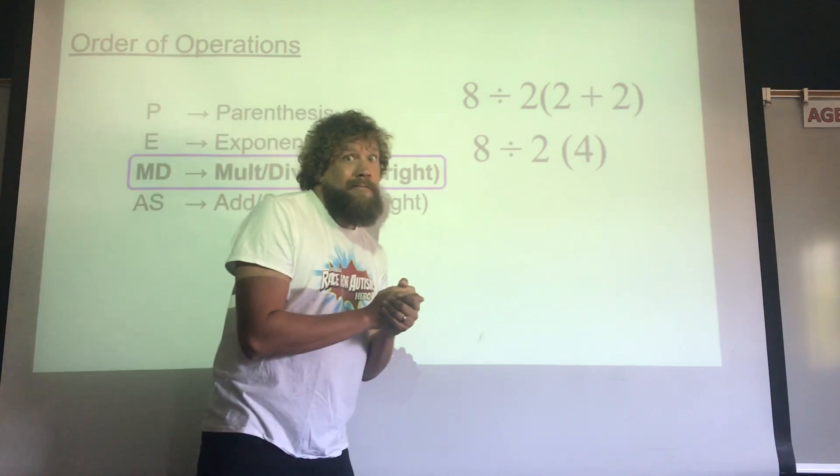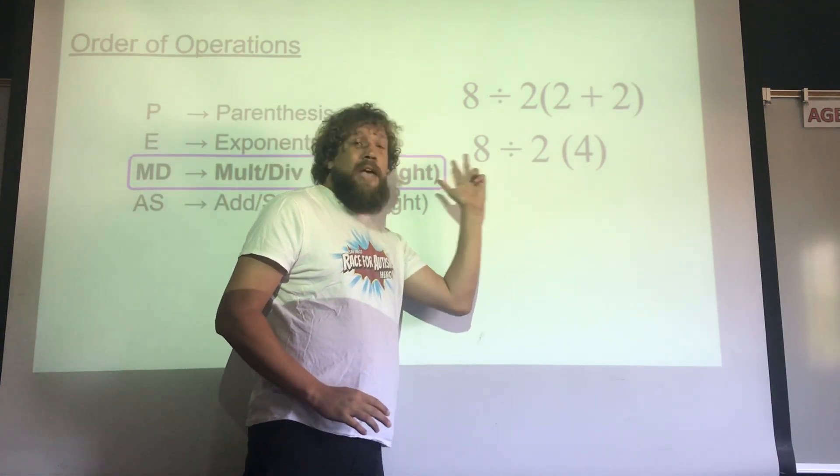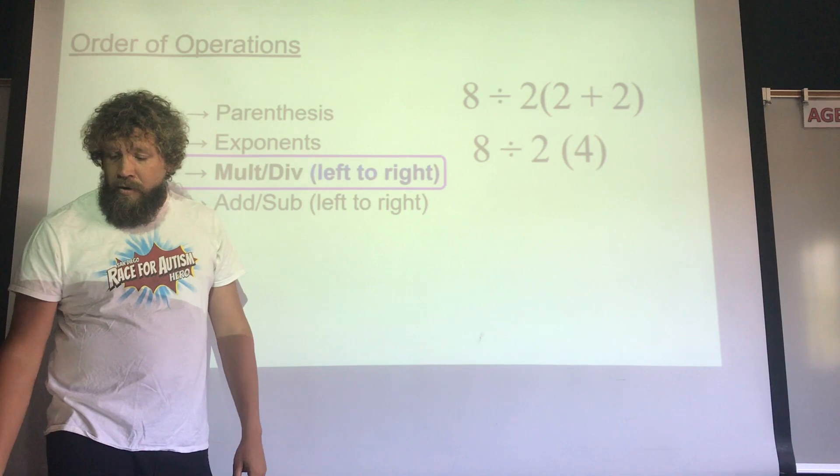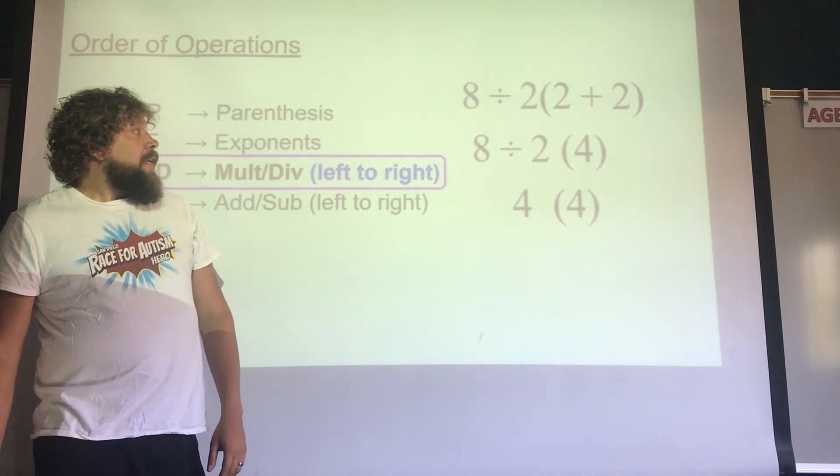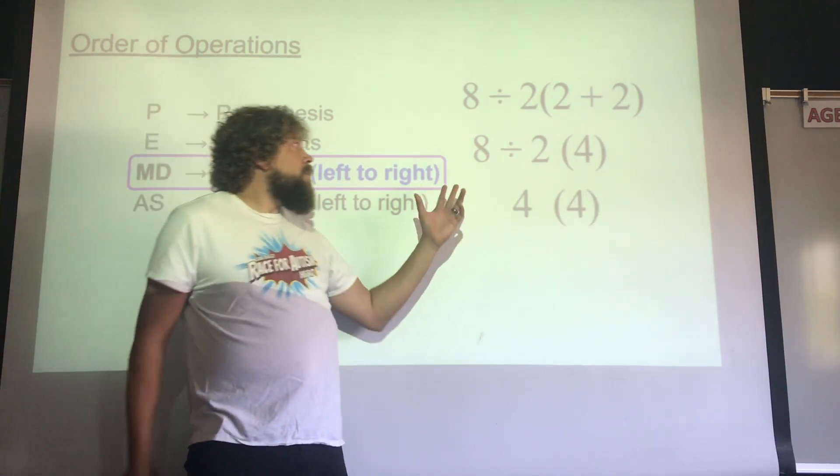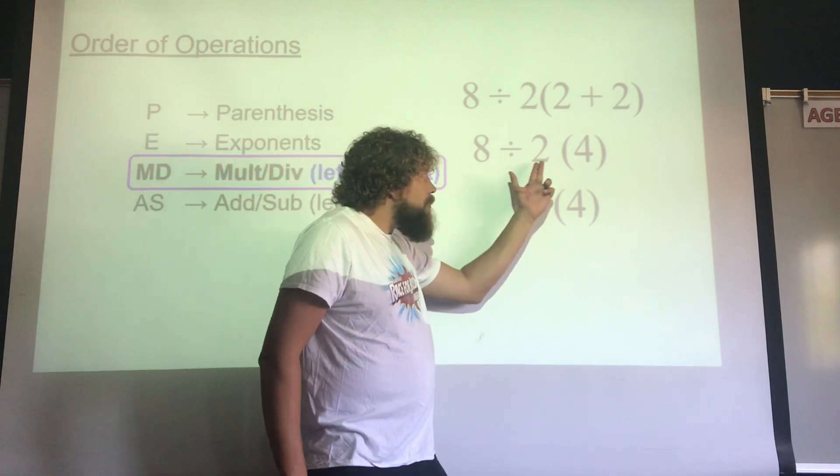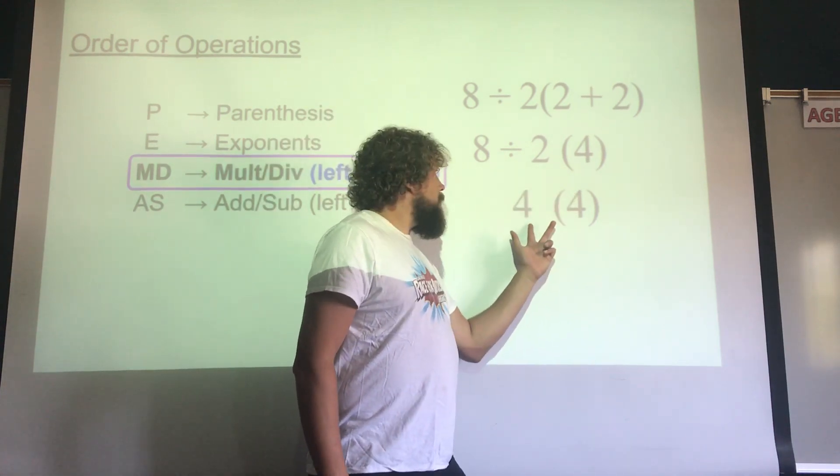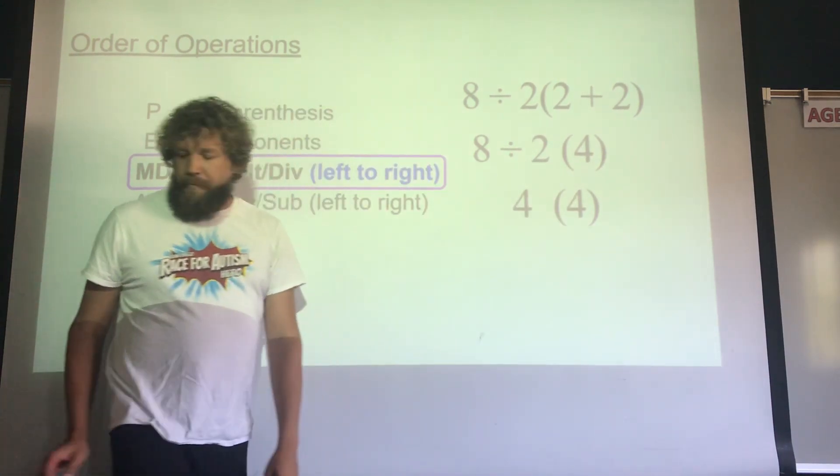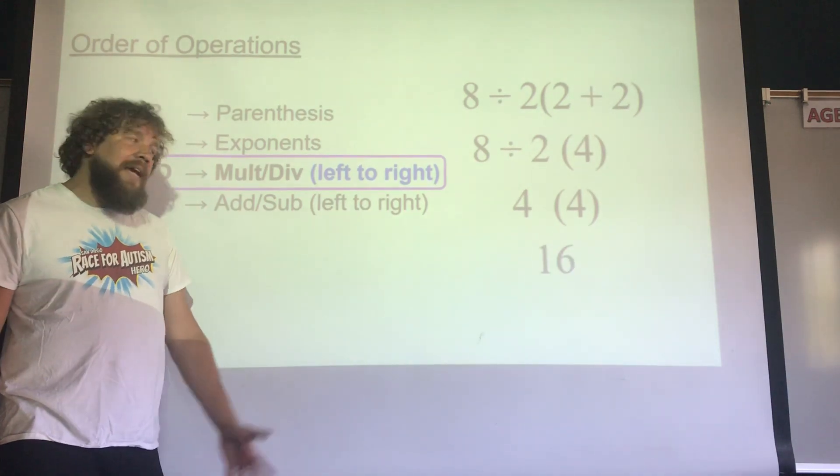We're gonna spend the rest of our time on this step right here: multiplying, dividing. All right, we do need to go from left to right, sorry people. So that means we're gonna have to do eight divided by two, which is four. Yeah. And then still multiplying, but the next thing from left to right, four times four, 16.